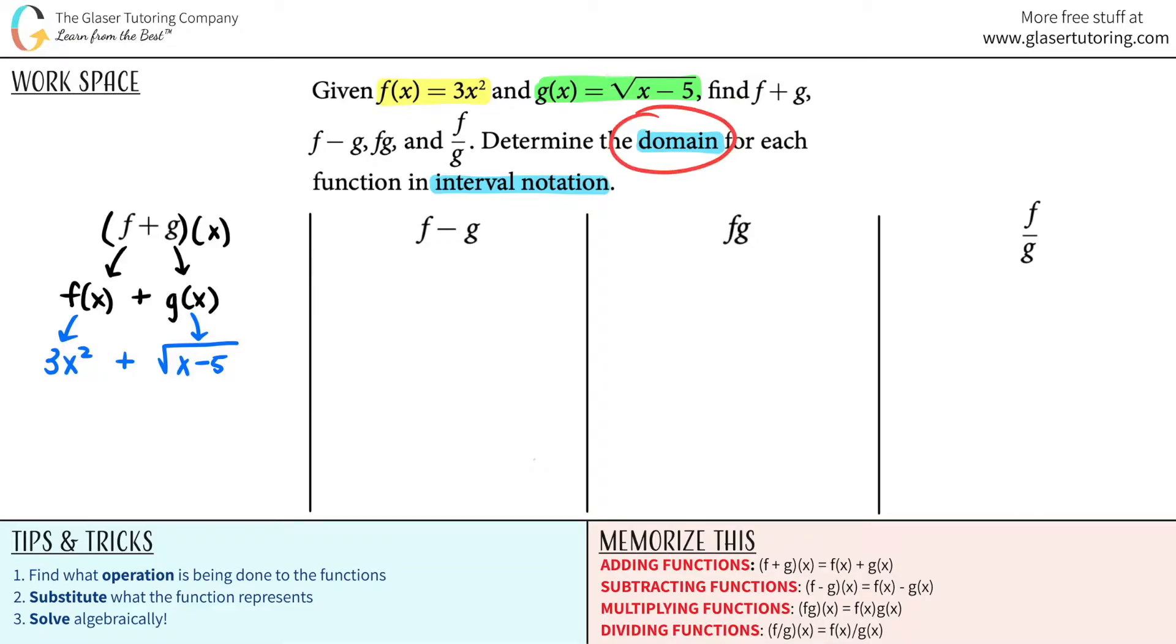Now for the domain part, you're always going to do your domain in interval notation for the one that is not simplified. So once I write my new function, I will put a star there, because never take a domain off of your simplified version. Always take a domain from unsimplified terms. Now I will try to simplify it. I can't really simplify this. There's no like terms. So in this case, it would just be the same thing. This is your new function when you added the two functions together.